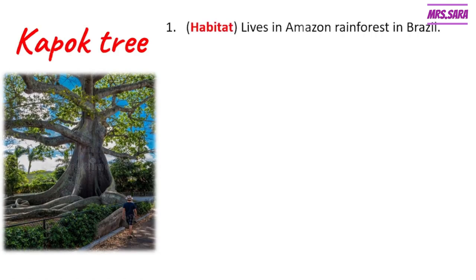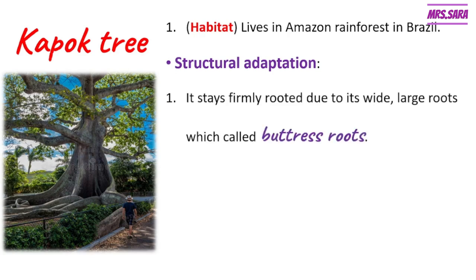Now we're going to talk about the kapok tree. The habitat or home of kapok tree is Amazon Rainforest, found in Brazil. Kapok tree, like acacia tree and like any living organism, has structural adaptation and behavioral adaptation. When I say structural adaptation, I talk about the structure of the kapok tree. As it's a plant, the structure starts with roots, then trunk, then leaves, flowers, and fruit.